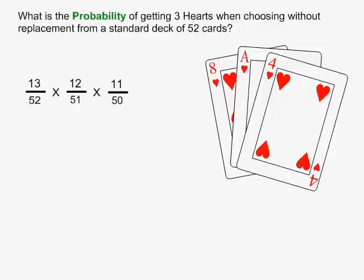Thus, the probability of the third event happening will be 11 over 50. When we multiply these fractions together, we get 1,716 over 132,600, which reduces to 11 over 850.